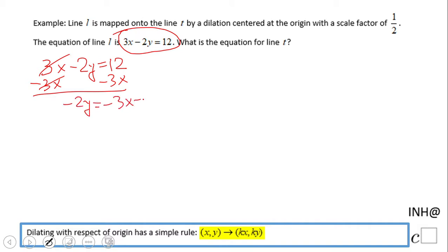Alright, and then dividing by negative 2, and simplify. In this case, which is 3/2x minus 6. So the slope is 3/2, very important.